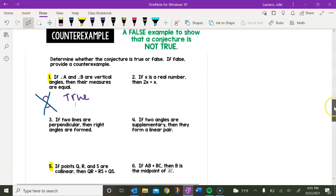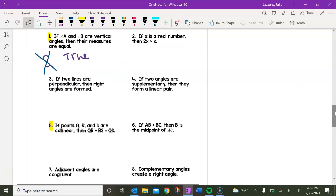Now let's look at number five. Number five says, if points Q, R, and S are collinear, then QR plus RS equals QS. Okay, so if Q, R, and S are collinear, that means they lie in a straight line. So if they lie in a straight line here, then QR plus RS would equal this, the entire length of line segment QS. So it looks true in this scenario.